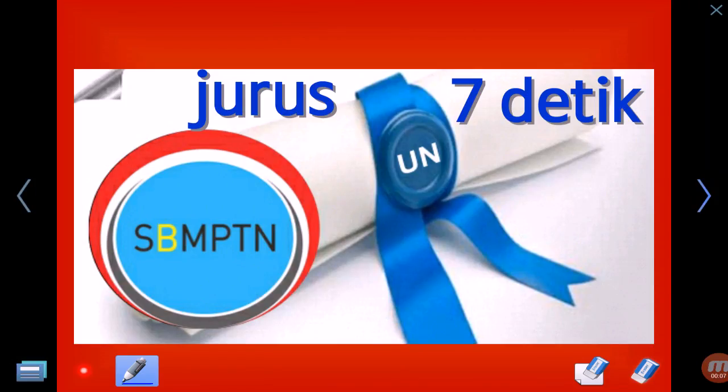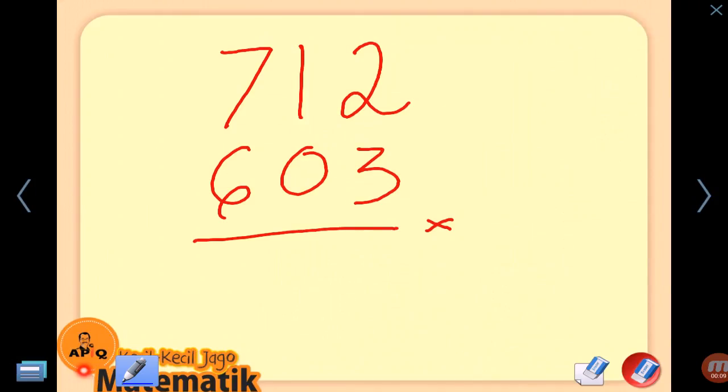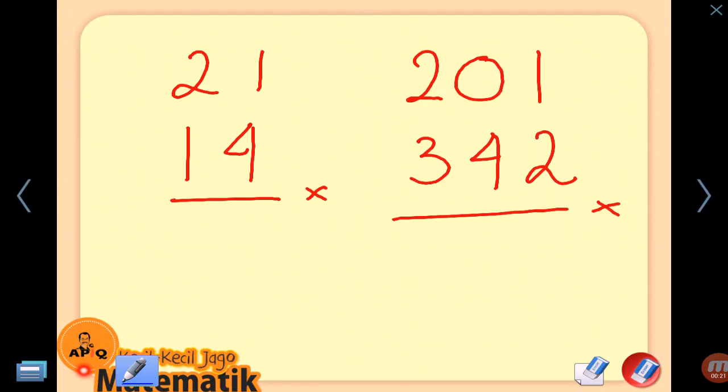Learning math fun and creative. We will multiply three digits with three digits with fast method, first method multiplication. At first we will try the simple one, two digits multiplied by two digits: 21 multiplied by 14.